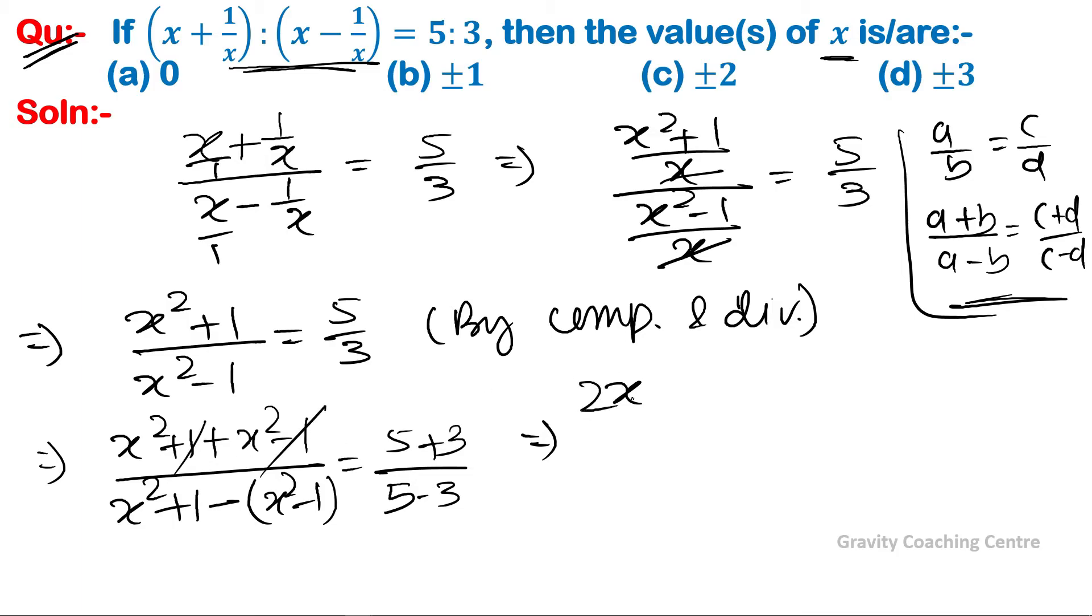1 cancels, so 2x²/(x² + 1 - x² + 1) = 8/2. Here x² and x² cancel, or it becomes 4.